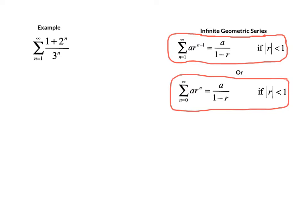The first thing we're going to do is a rewrite. We're going to divide through each term in the numerator by the denominator, which gives us a summation of 1 over 3 to the n plus the summation of 2 to the n over 3 to the n.